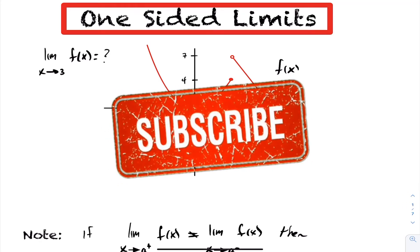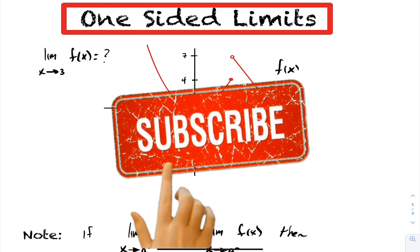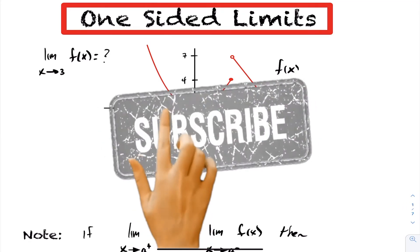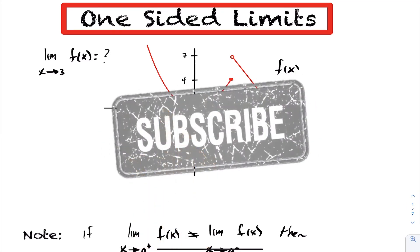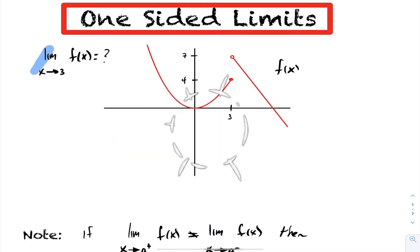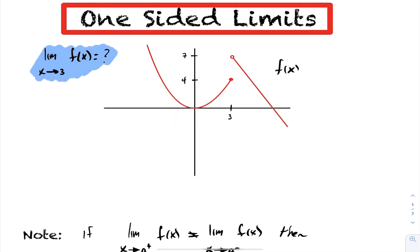In today's lesson, we're going to be looking at one-sided limits. So let's take a look at this question here. We want to find what is the limit as x goes to 3 of f(x). Now, we have a problem here that wasn't in the previous questions we looked at.